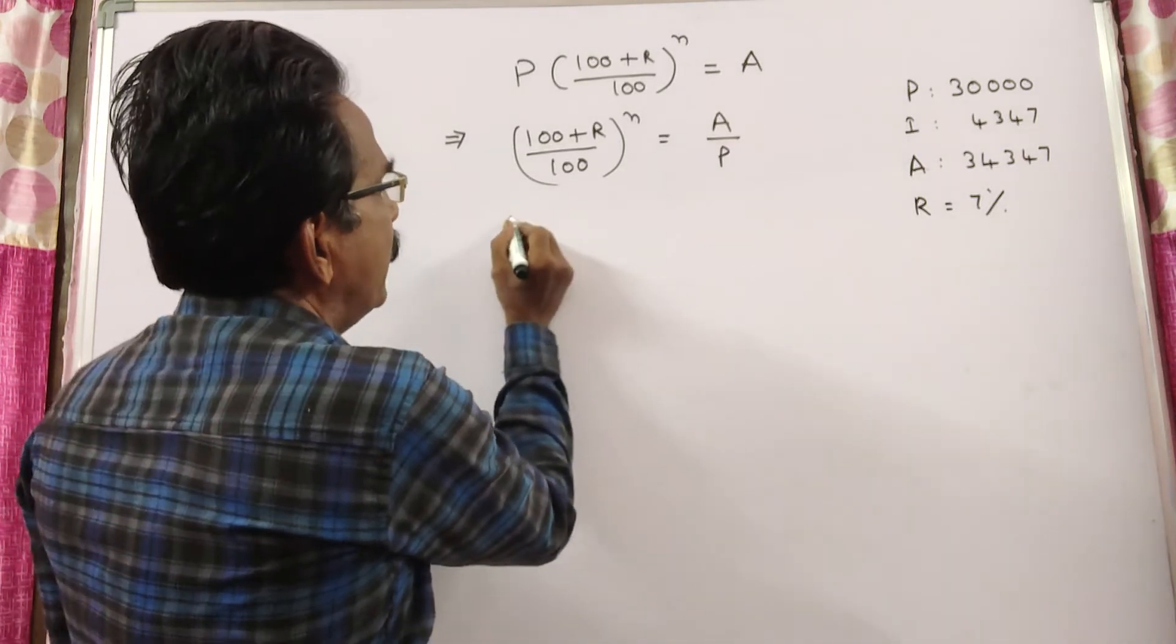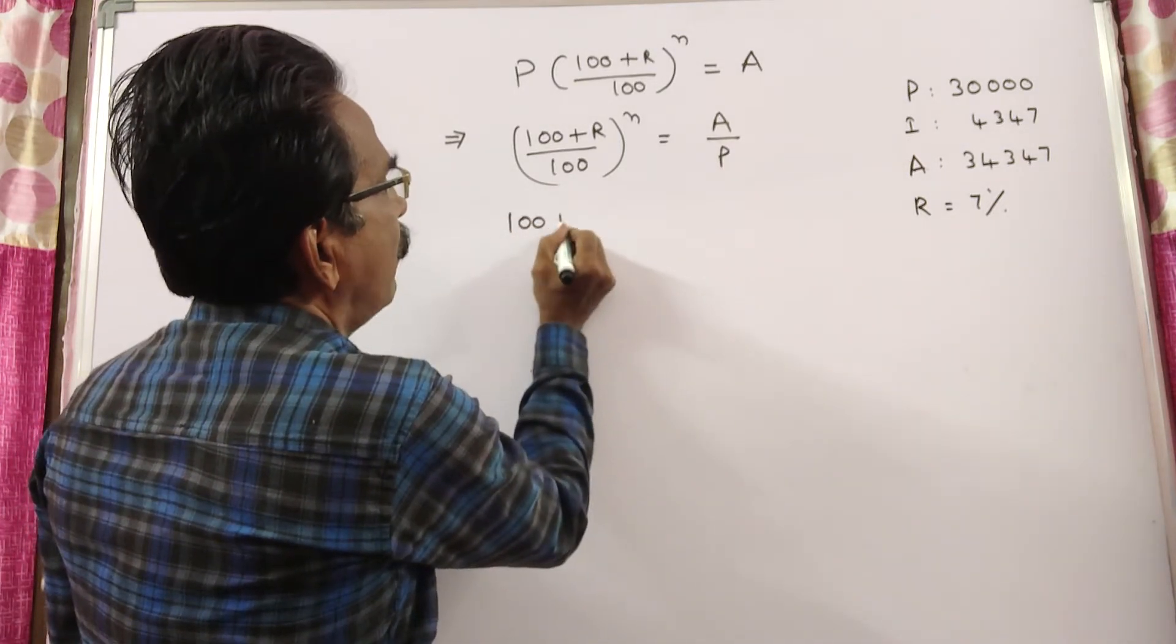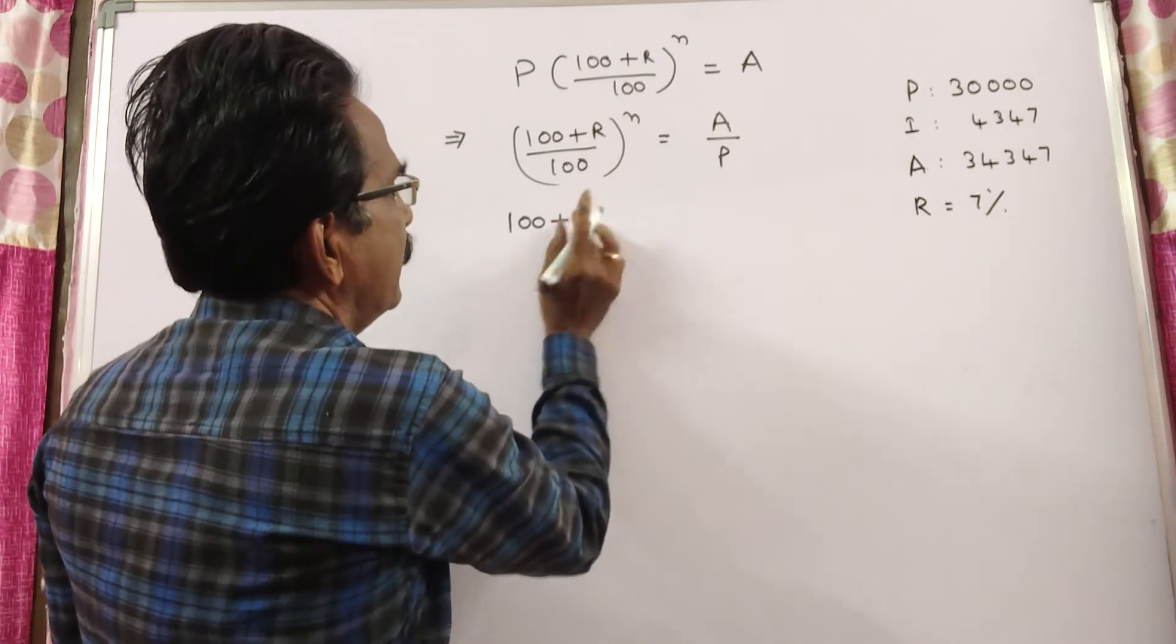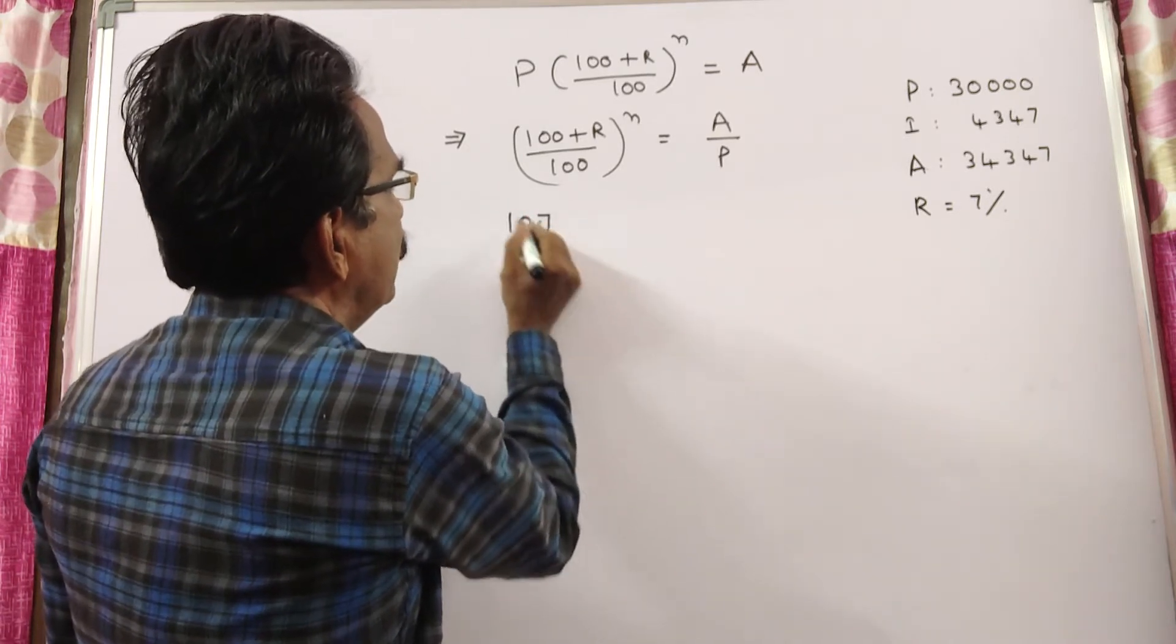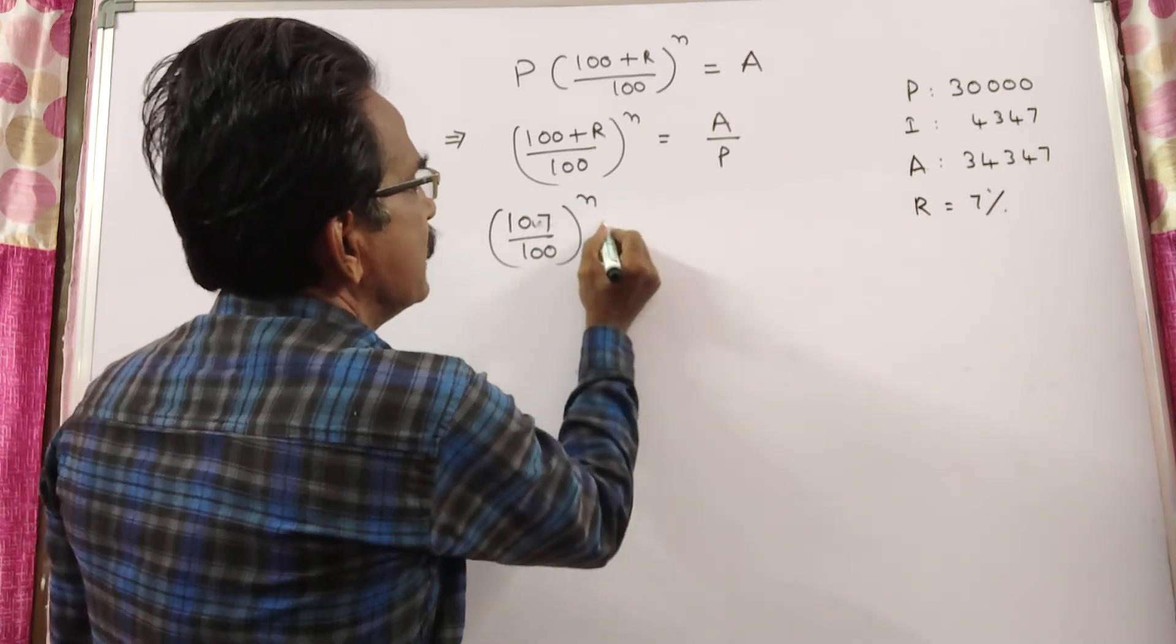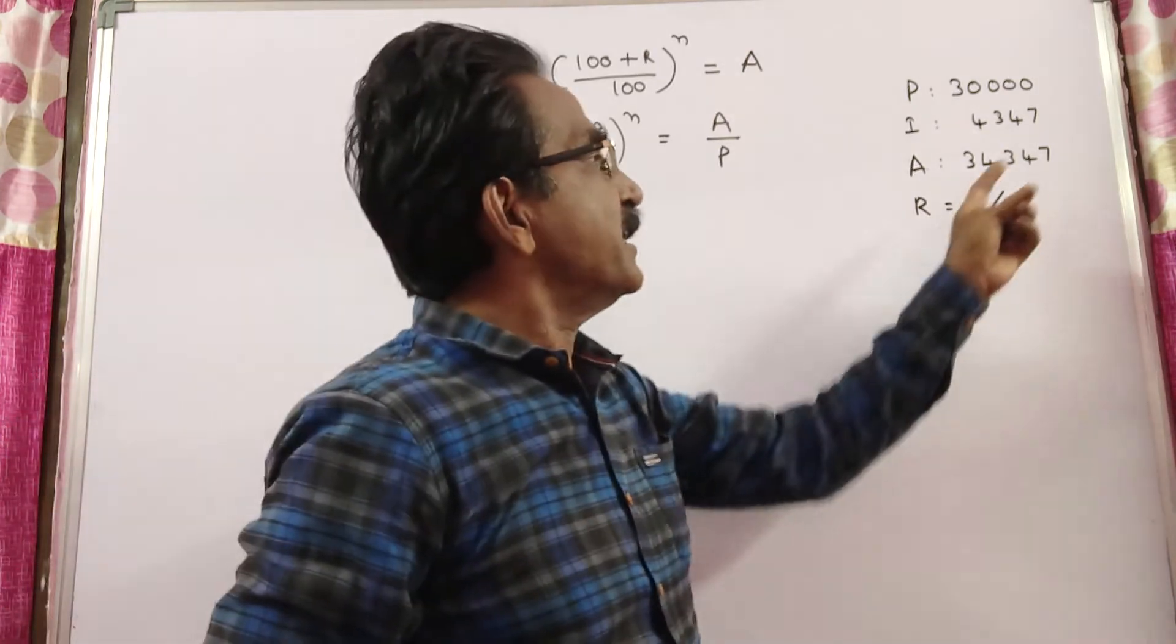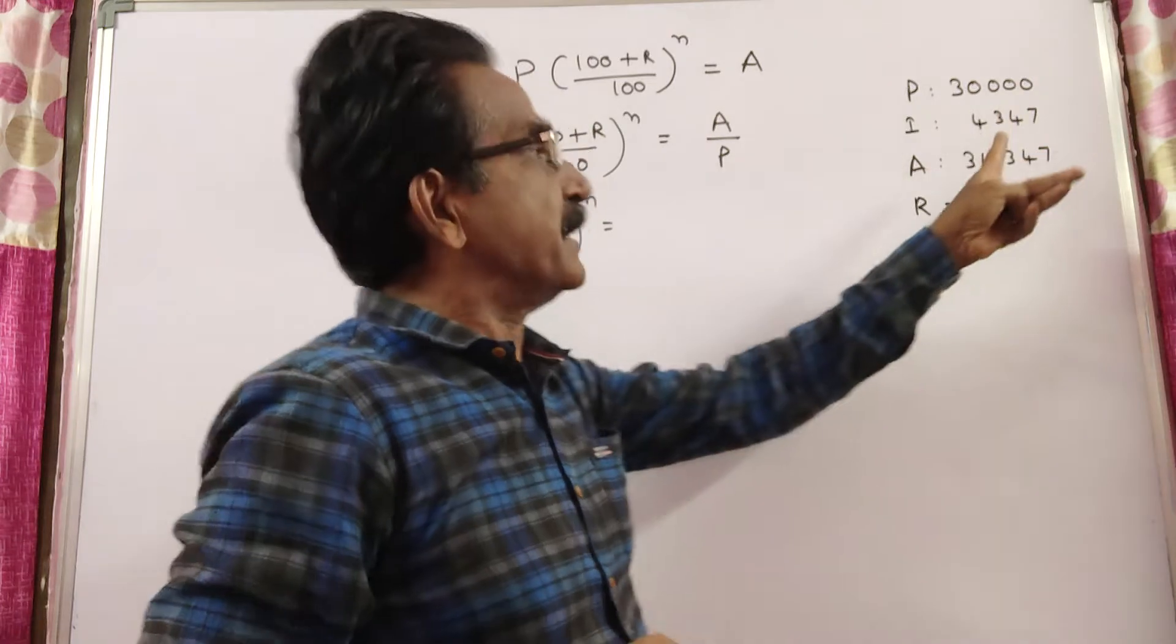Now let us substitute the values. 100 plus R, which is 7, so 107/100 whole power N equals A/P. What is A? Principal plus interest.